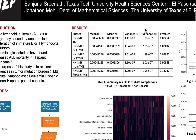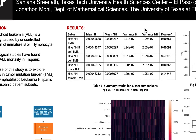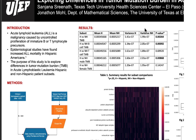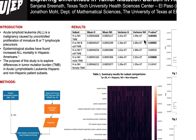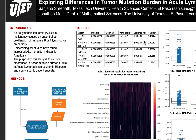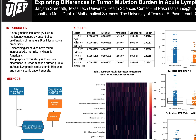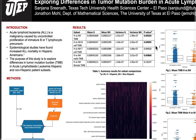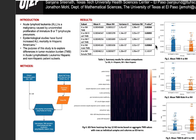Moving on to the results of the study, 534 patients were included in the present study. We found significant differences in mean TMB values between Hispanic and non-Hispanic groups, as well as significant differences in male-specific Hispanic versus non-Hispanic TMB. We also found significant differences in B-cell-specific Hispanic and non-Hispanic TMB values as well.